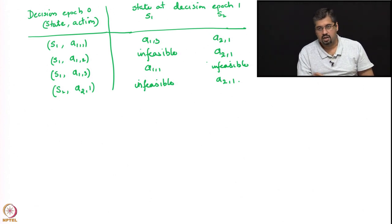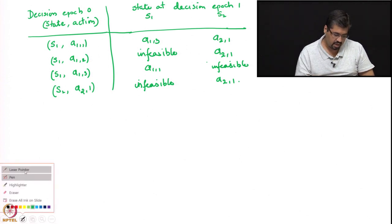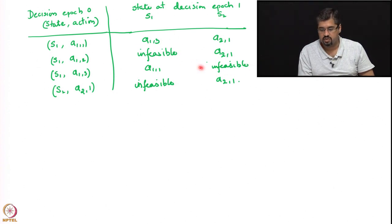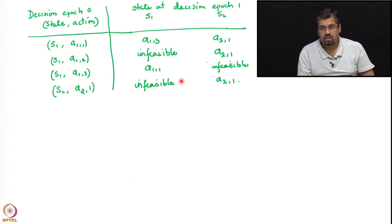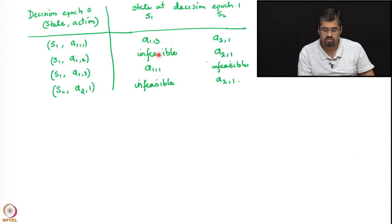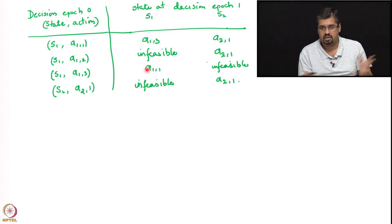Any policy, regardless of what it is, once it is history-dependent will have to respect which kinds of histories are actually feasible. These infeasibilities will occur in any history-dependent deterministic policy you define. However, there is significant variation possible in terms of the actions you can choose for feasible entries — for example, you could choose a12, a13, or a11 in various places. All of these are valid history-dependent deterministic policies.